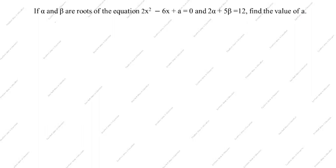Now we will solve this problem. The standard quadratic equation formula is ax² + bx + c = 0. What is given in this question? 2x² minus 6x plus a equals 0. So here a = 2, b = -6, and c = a.